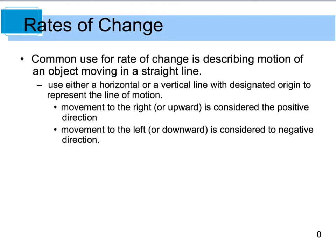Common uses for rate-of-change problems involve describing the motion of an object — acceleration, velocity, and displacement are classic calculus problems. When talking about motion, we typically look at something on either a horizontal or vertical line with a designated origin. Movement to the right or upward is the positive direction; movement to the left or downward is the negative direction.